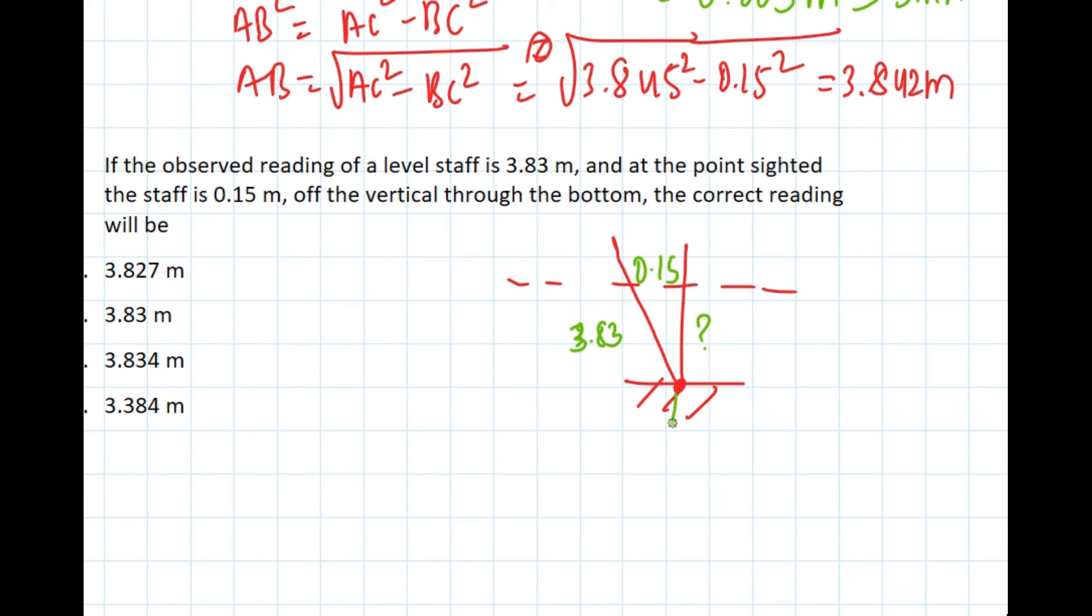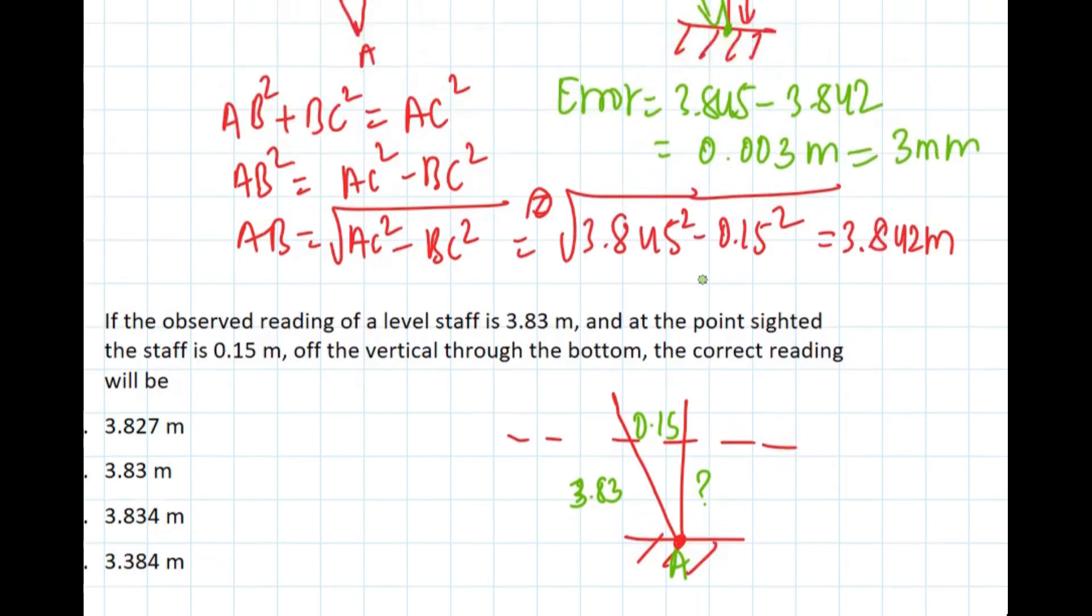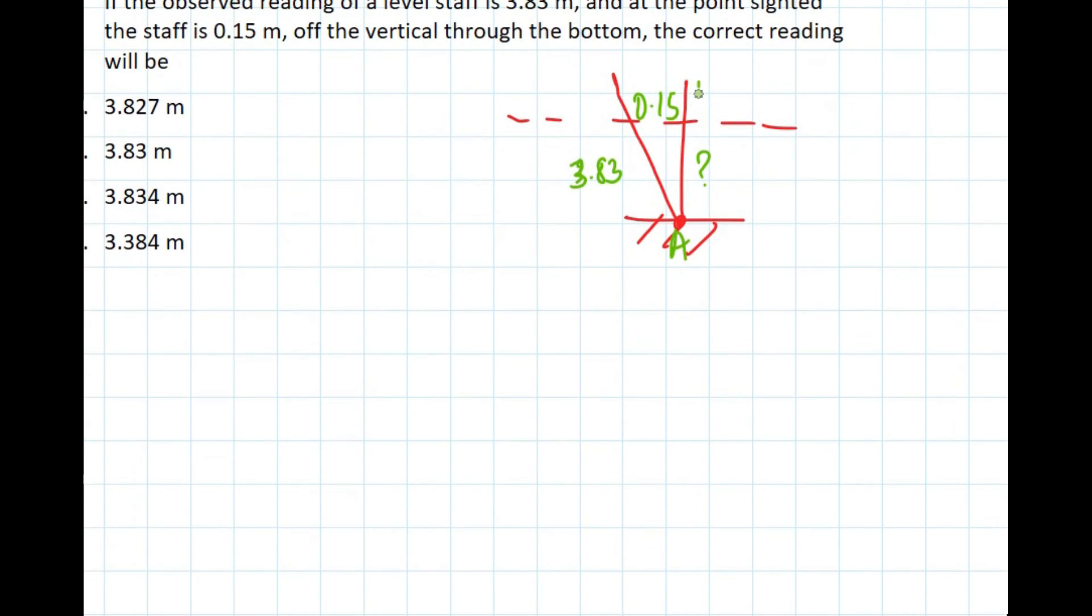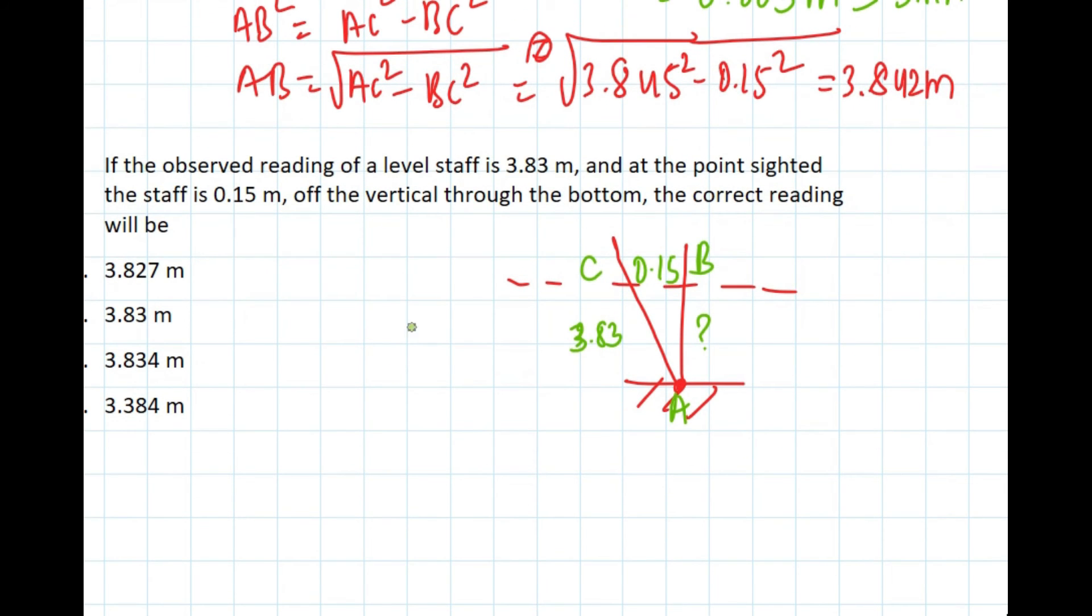This is A, this is B, and this is C. So our formula from Pythagorean theorem: AB equals √(AC² - BC²). AC² is 3.83² minus BC² is 0.15².